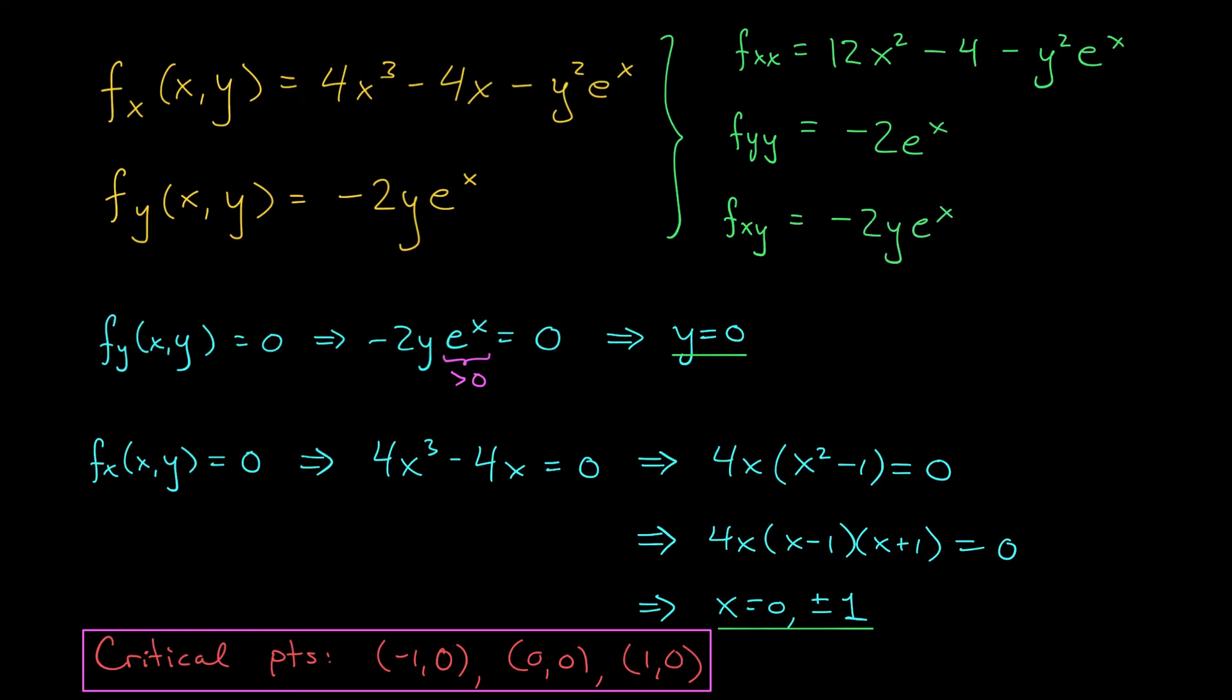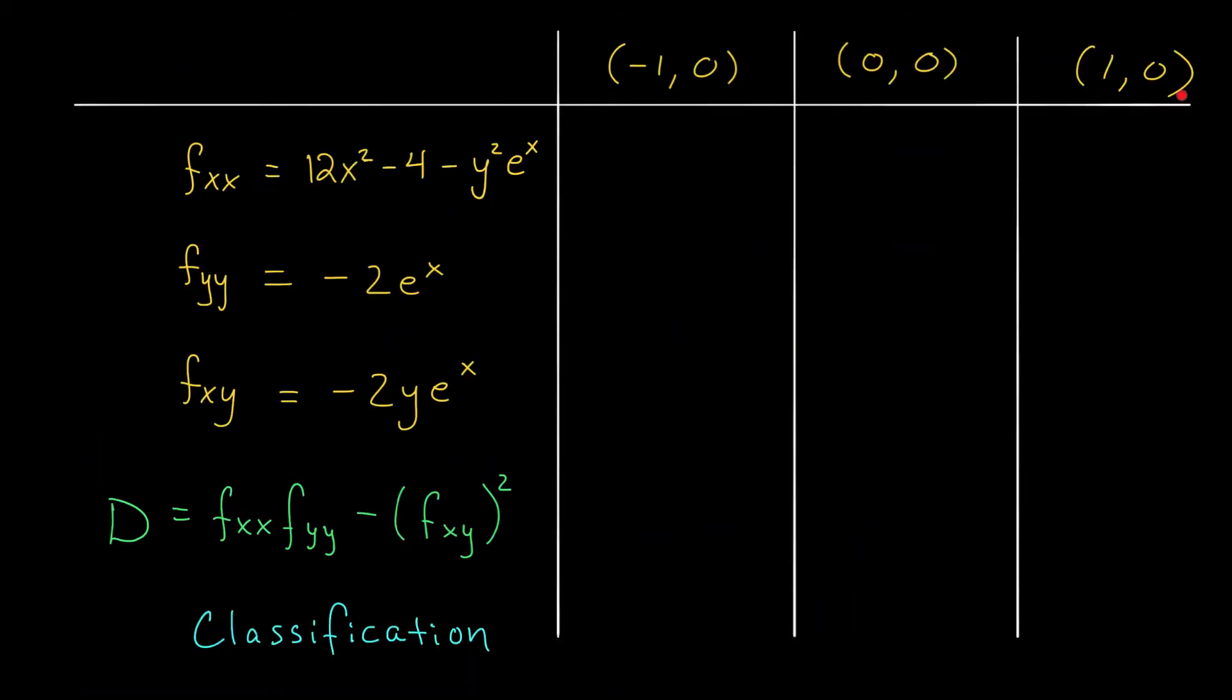All right, let's make our table and wrap up this problem. Okay, we have our critical points at the top, our second partial derivatives on the left, as well as this function d. We're looking for the sign of this function in order to classify our critical points.